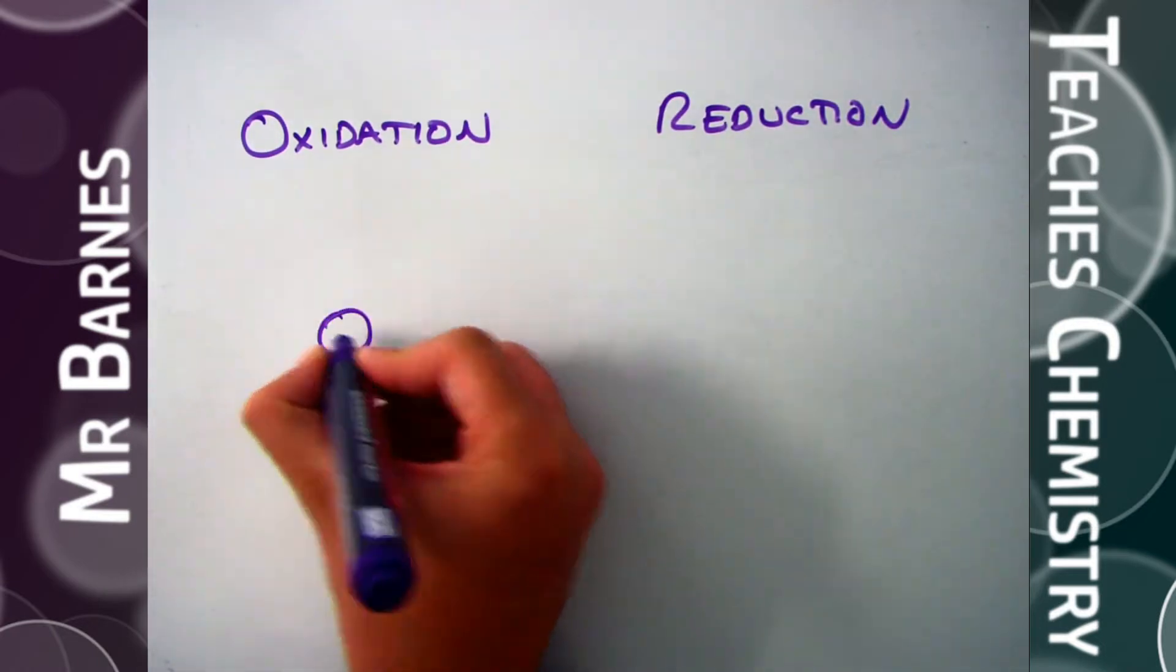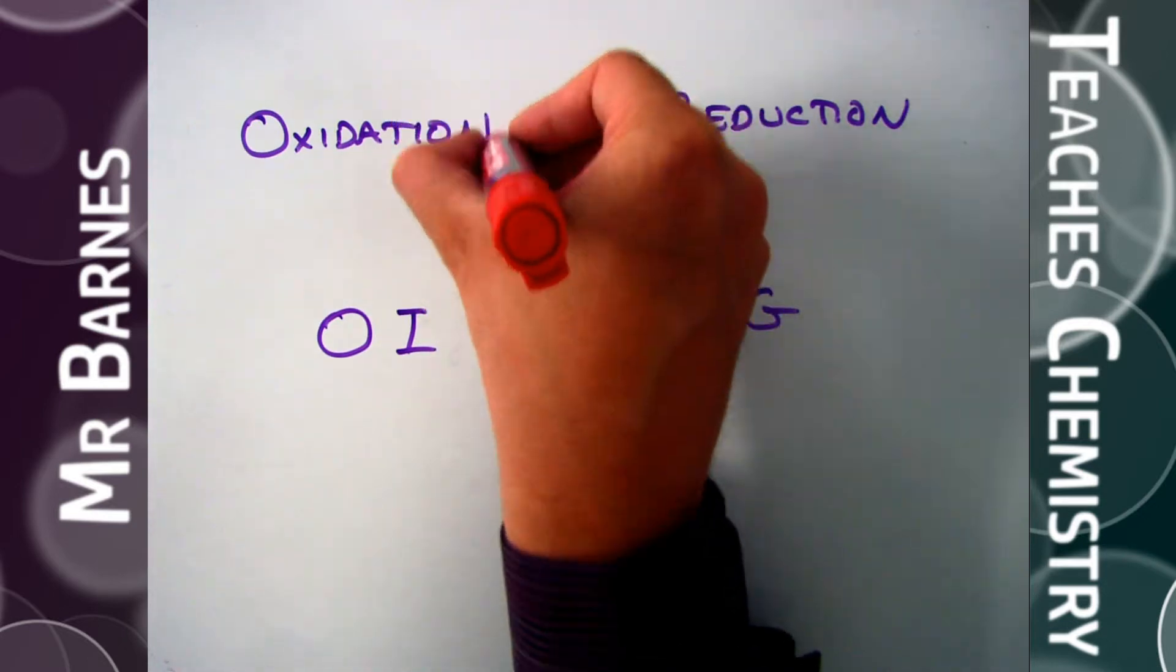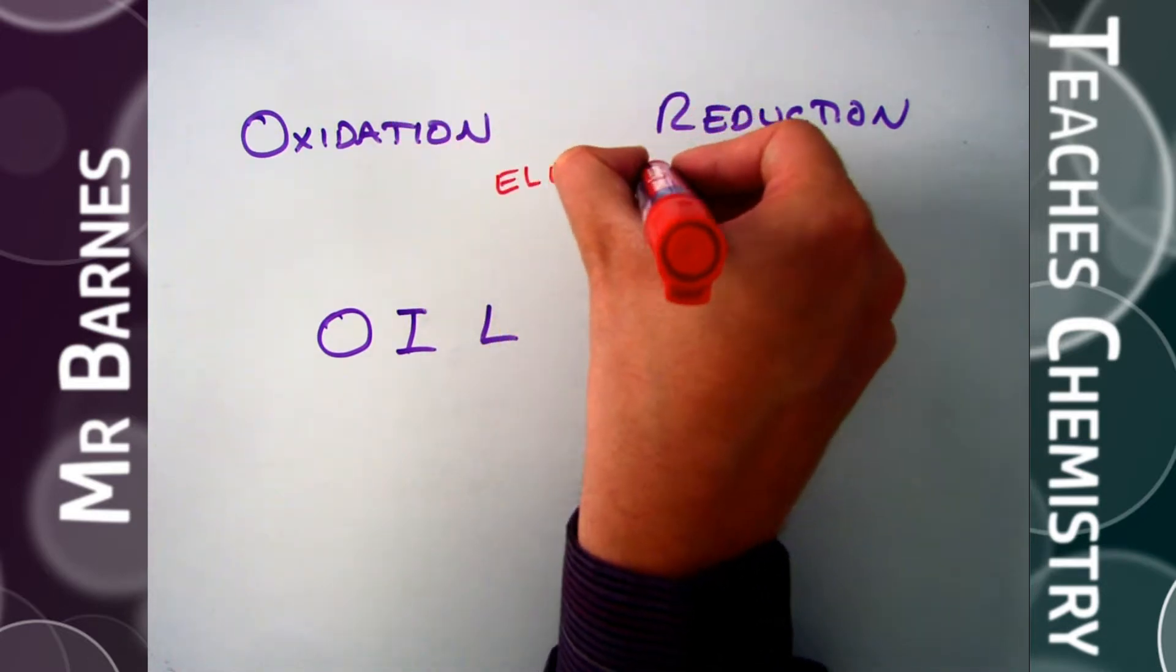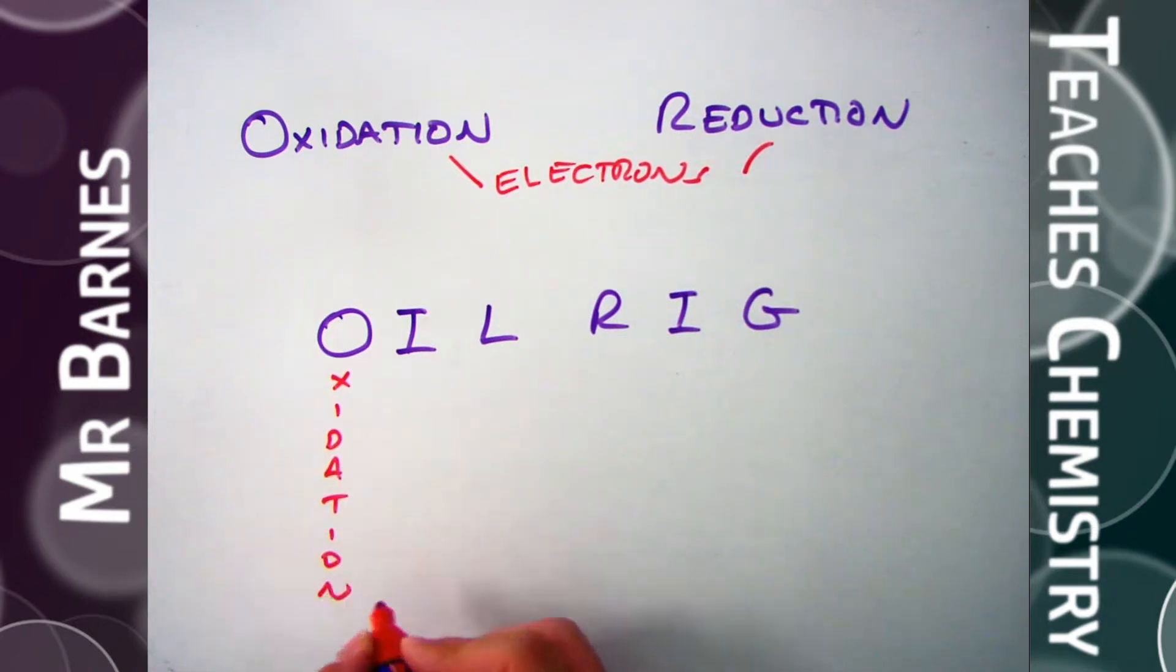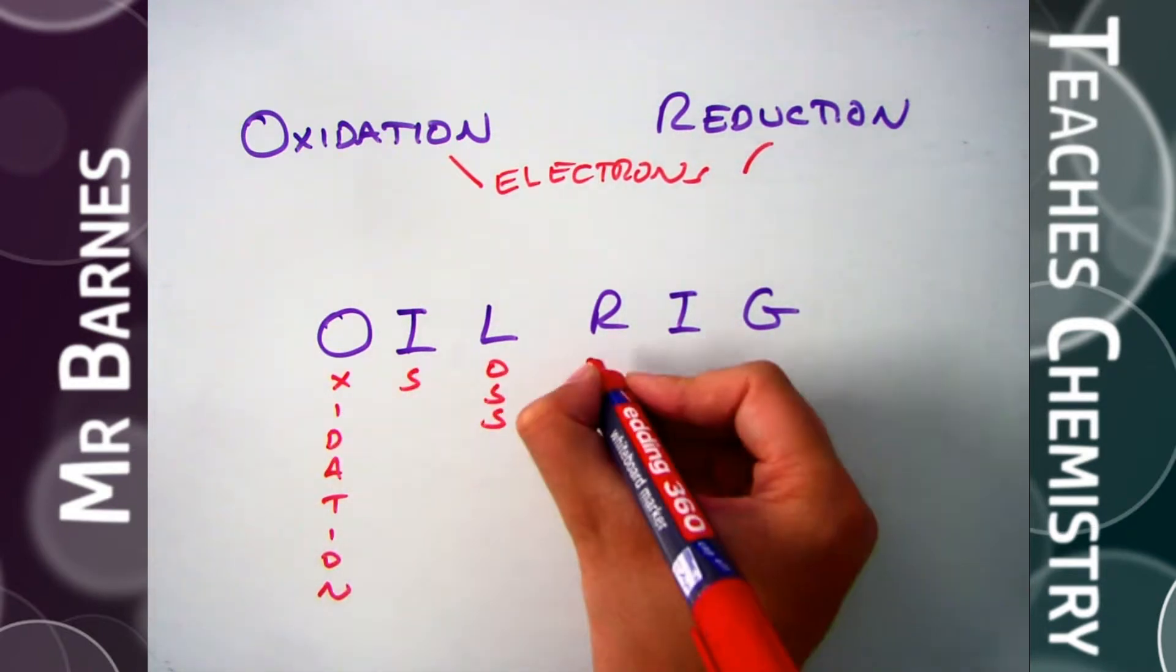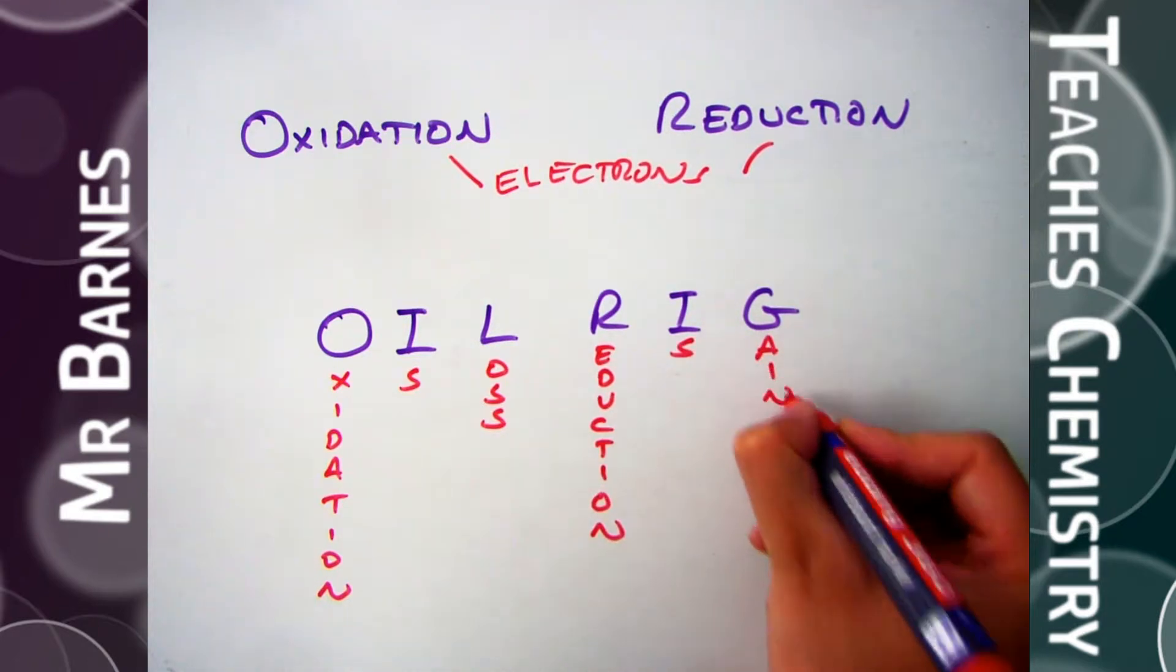What you've got to be able to do is tell me what happens in terms of electrons during electrolysis, and is that oxidation or reduction? Now to do that, there's an acronym I'd like you to remember, which is OIL RIG. OIL RIG stands for oxidation is loss of electrons, and reduction is gain of electrons.